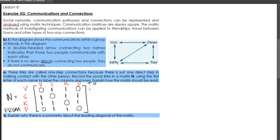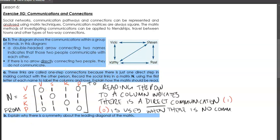But then it says explain how the matrix should be read. Now the explanation is just really based on what the number zeros and ones represent. So I wrote, reading the row to a column, because remember we're getting the row, all of these four rows, to one of these four columns. It indicates that there is a direct, an underline direct communication with the number one. And if the number zero, zero is used when there is no communication.